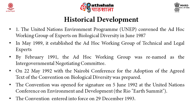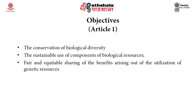The Convention on Biological Diversity was inspired by the world community's growing commitment to sustainable development. It represents a dramatic step forward in the conservation of biological diversity, the sustainable use of its components, and the fair and equitable sharing of benefits arising from the use of genetic resources. The objectives of the convention have been laid down in Article 1. The convention, while reaffirming sovereign rights of nations over their biological resources, establishes three main goals: number one, the conservation of biological diversity; number two, the sustainable use of components of biological resources, promoting sustainable development to utilize resources judiciously; and number three, fair and equitable sharing of the benefits arising out of the utilization of genetic resources.